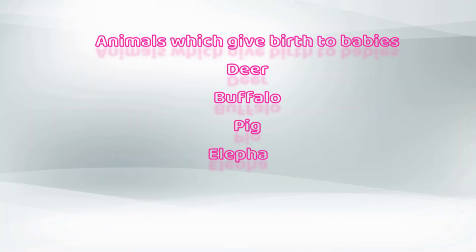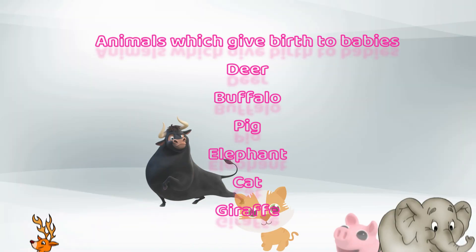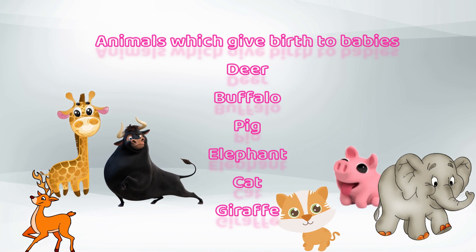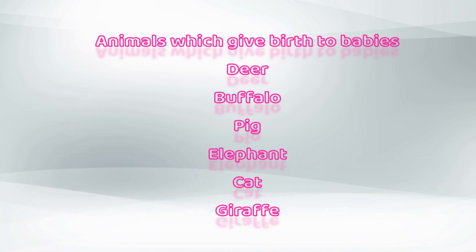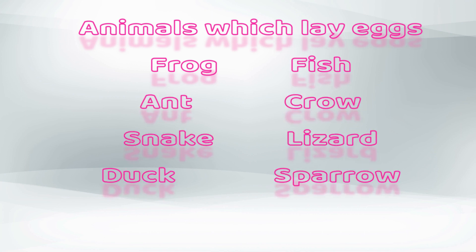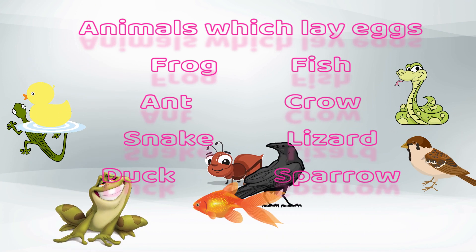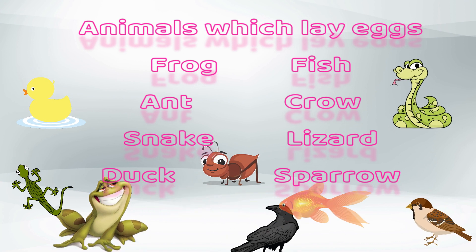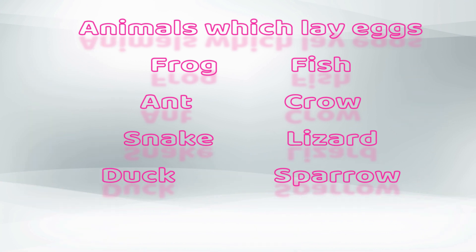Animals which give birth to babies are: deer, buffalo, pig, elephant, cat, giraffe. Animals which lay eggs are: frog, fish, ant, crow, snake, lizard, duck, and sparrow.